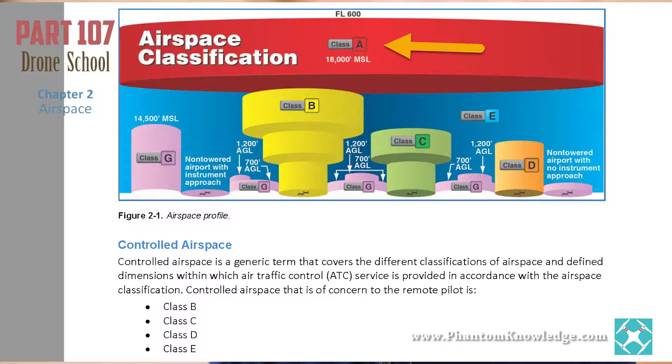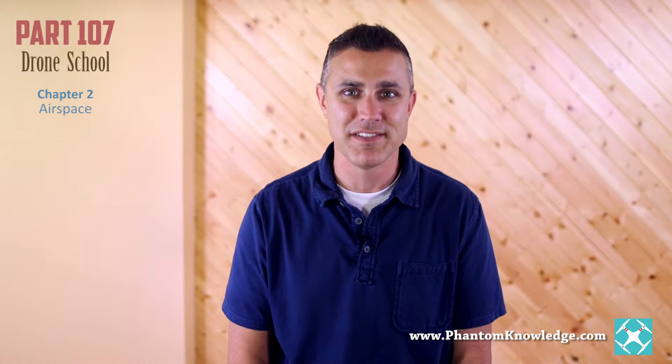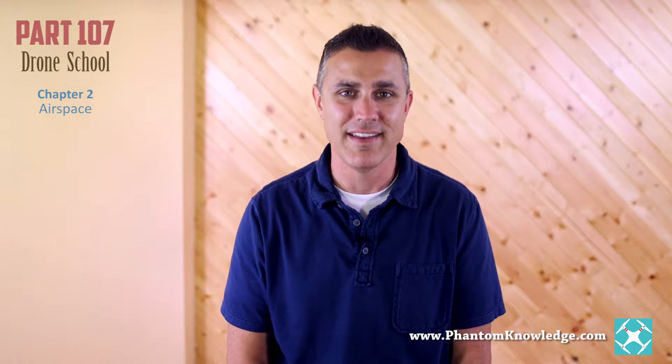Let's get started with Class A airspace. Class A airspace is at 18,000 feet above mean sea level, or MSL. So forget about it — your unmanned aircraft isn't going that high.